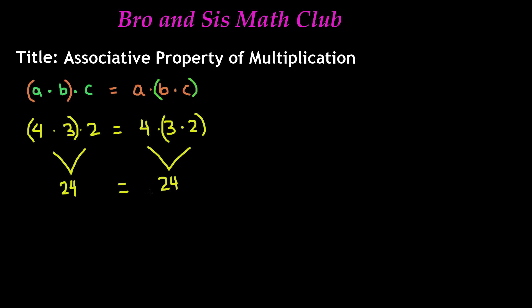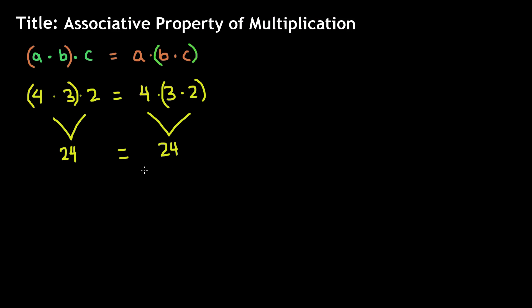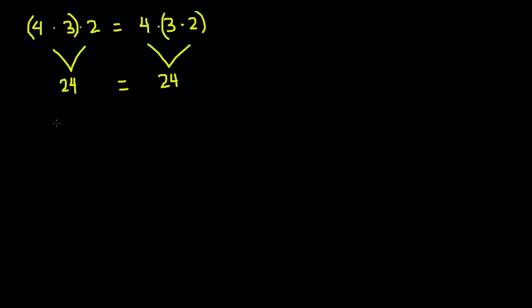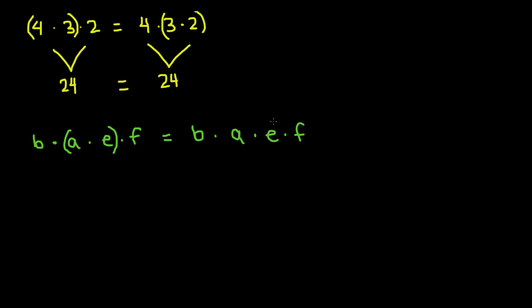So those were just 3 terms. Let's do another example, this time with 4 terms, so we have an idea of how to do it with more than 3 terms. So let's say that we have b times a times e times f, with a and e in parentheses. I can rewrite this as b times a times e times f with e and f in parentheses.